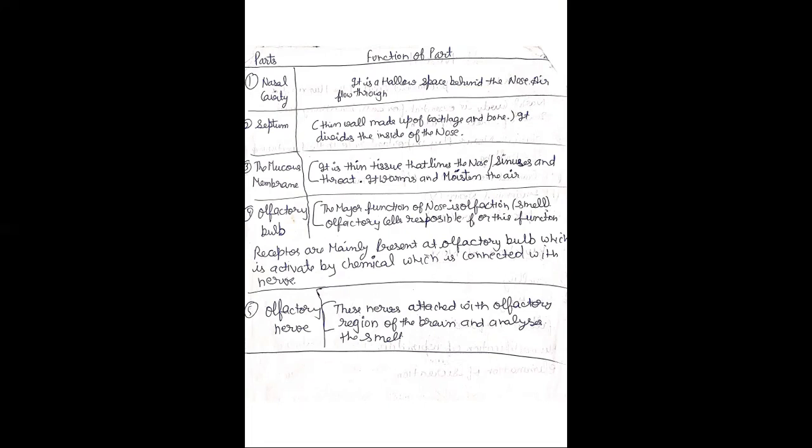Receptors are mainly present at the olfactory bulb, which is activated by chemicals and connected with the nerves. The olfactory nerves — which are the first cranial nerves — are responsible for your sense of smell. These nerves attach to the olfactory region of the brain and analyze the smell.